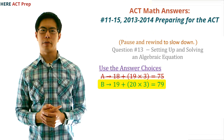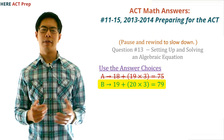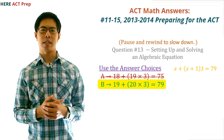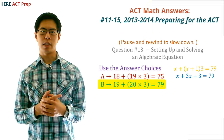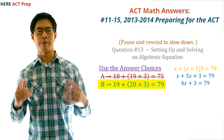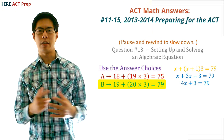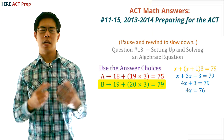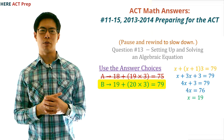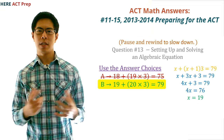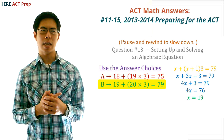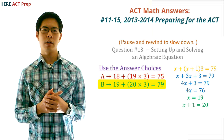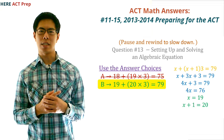If we wanted to set up an algebraic equation, we would have done x plus (x + 1) times 3 equals 79. We simplify this to get x plus 3x plus 3 equals 79. Combine x and 3x to get 4x plus 3 equals 79. Subtract 3 from both sides to get 4x equals 76. Divide by 4 on both sides to get x equals 19. So the first integer is 19 and the second integer is x plus 1, or 20. As you can see, this took longer, was more complicated, and was unnecessary.